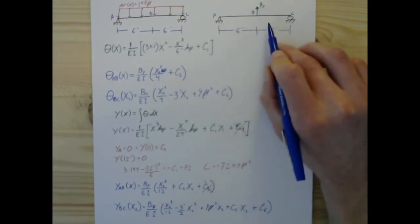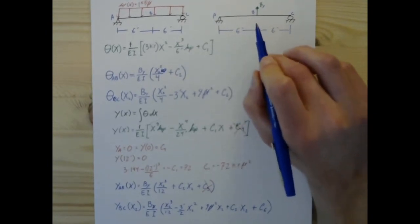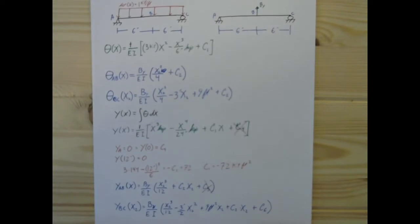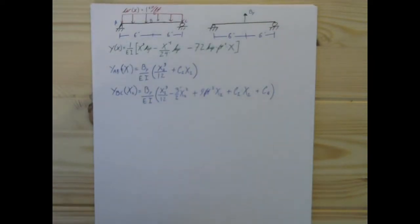Right, the beam that we're considering does not have that roller there. What we can do is say that the deflection at b that we find with this equation has to be the same as the deflection we find at b with this equation. So, let's do that.